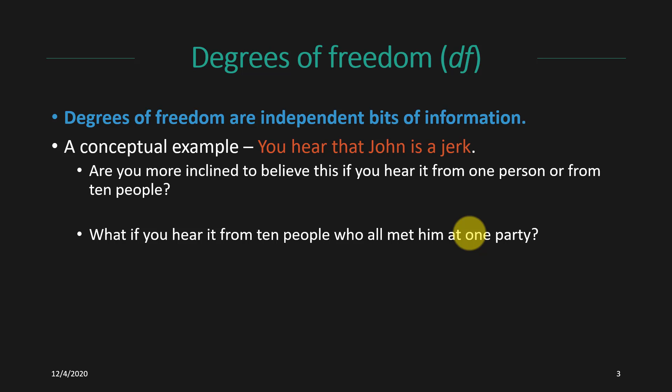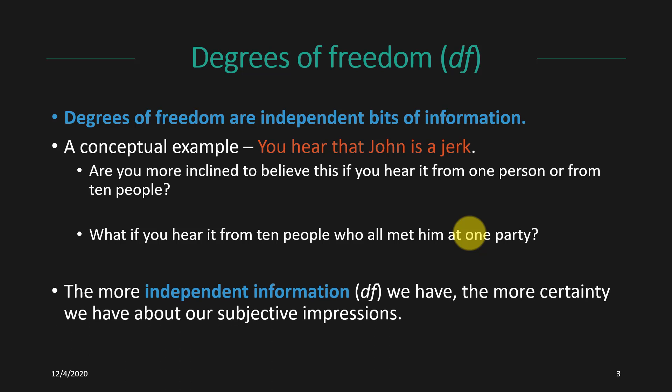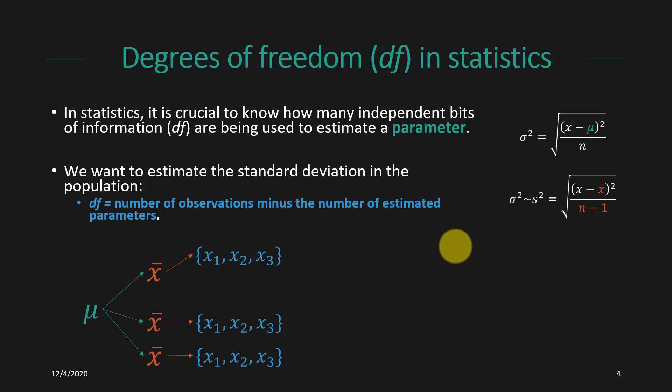We make these kinds of judgments intuitively based on the amount of information we have all the time. The more independent information we have, the more certainty we generally have about our subjective impressions, and that's the same in statistics. The difference is that now we have to make a conceptual pivot and mathematically define what we mean by degrees of freedom and just how certain or uncertain we are based on those degrees of freedom.